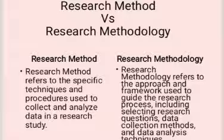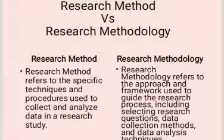First, we will discuss the difference between research method and research methodology. The difference between research methods and research methodology is not a new concept — it has been around since the beginning of scientific exploration. Research method and research methodology are often mistaken for the same thing, but they are actually two distinct aspects of research. Research methods involve the specific techniques to collect and analyze data, while research methodology is the overall systematic framework guiding the research approach that helps researchers design their study. Research methodology is a systematic and theoretical approach to collect and evaluate data throughout the research process, and research method consists of all techniques, strategies, and tools employed by a researcher to complete research.